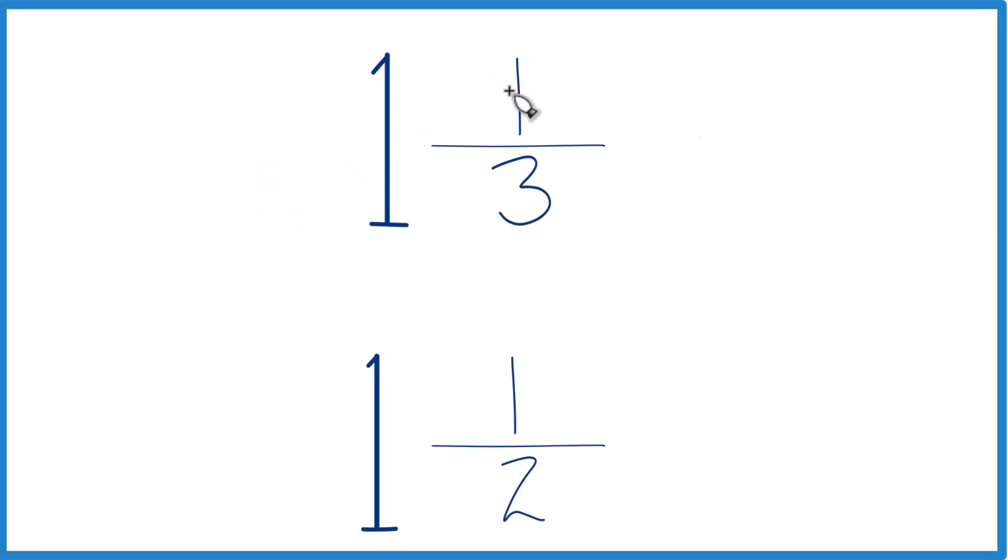So which one of these fractions here is greater? 1 and 1 third or 1 and 1 half? So how do you figure that out? To start off, both of them have 1, this whole number 1. So let's just ignore it.